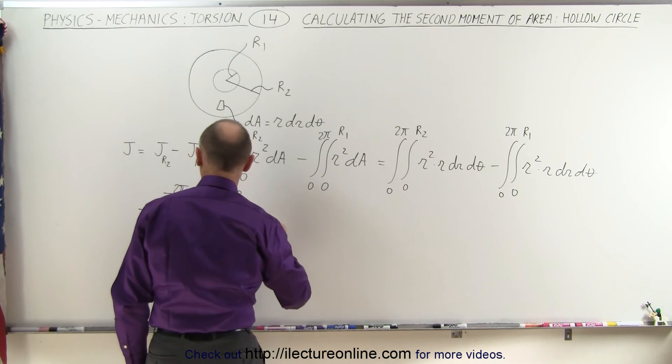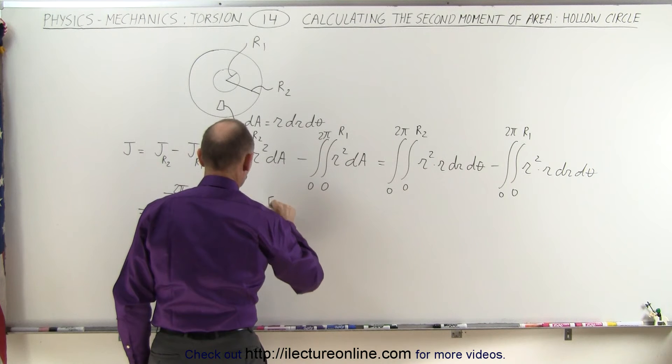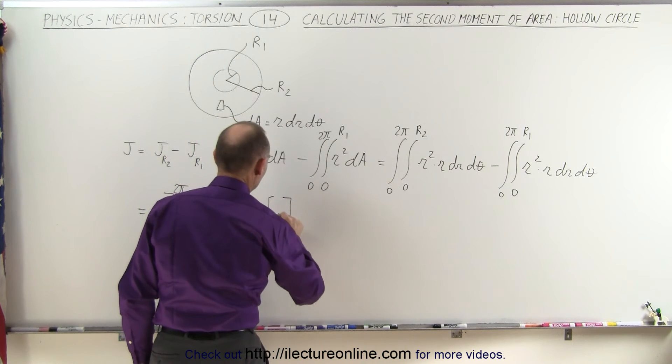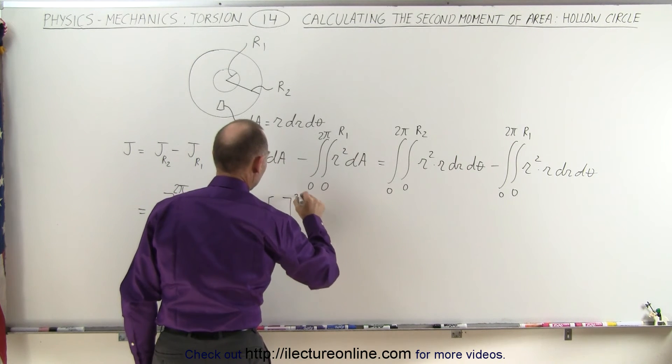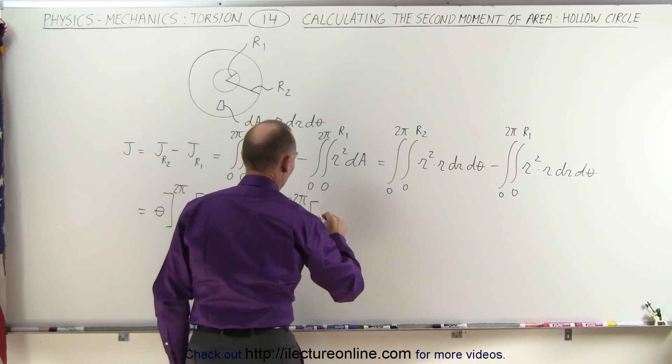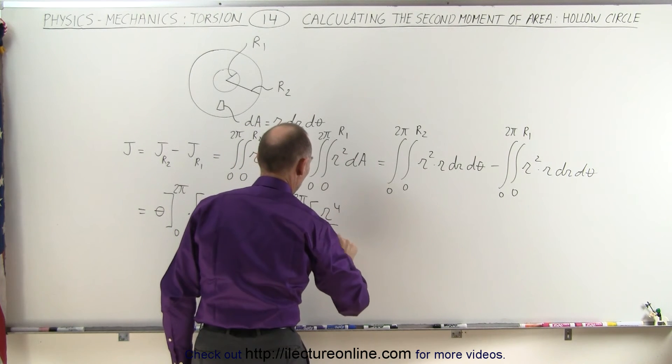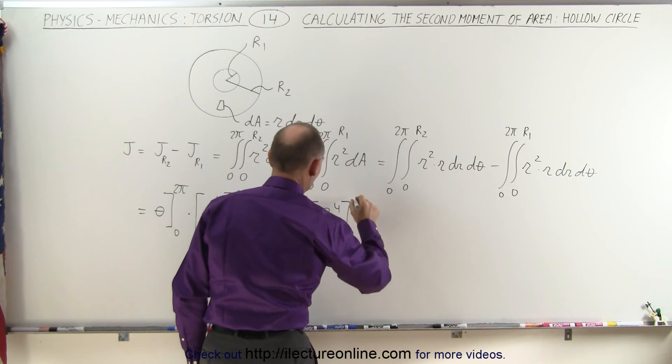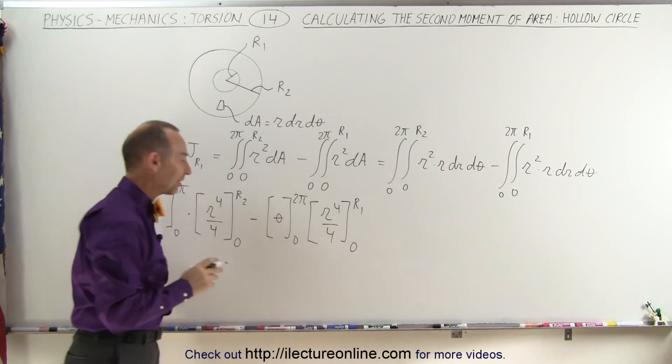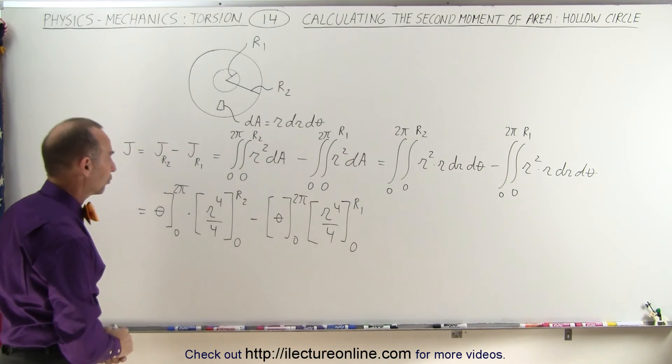evaluated from 0 to R2. And of course, we get exactly the same for the other one, this would be equal to theta evaluated from 0 to 2 pi times R to the fourth over 4 evaluated from 0 to R1. So we get the exact same result, but with R1 instead of R2.